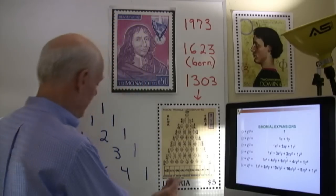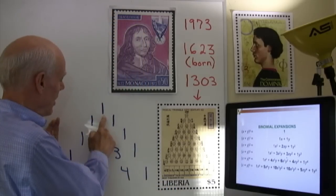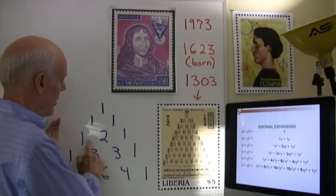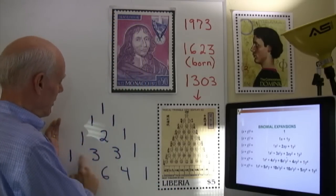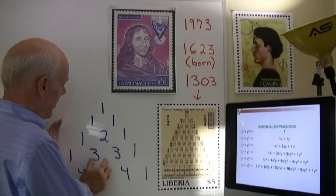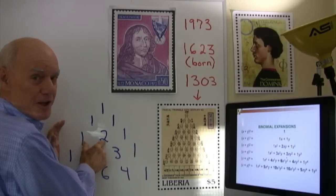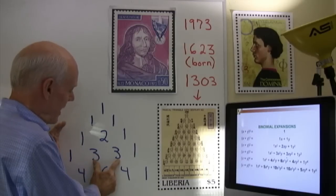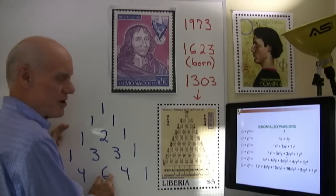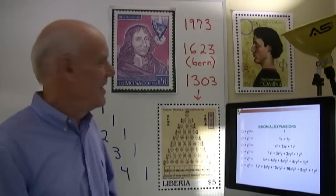I've written the first part of it over here: 1, 1, 1, 1, 2, 1, 1, 3, 3, 1. This number comes from the sum of these two. We add these two to get this one, add these two to get this one, so on and so forth.